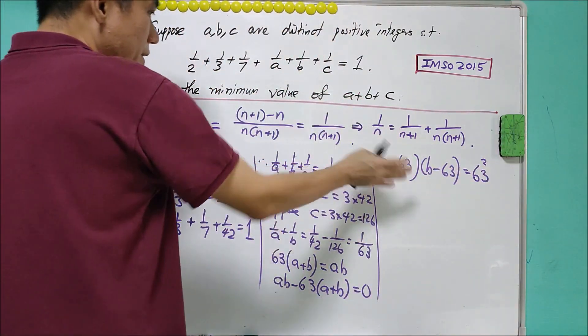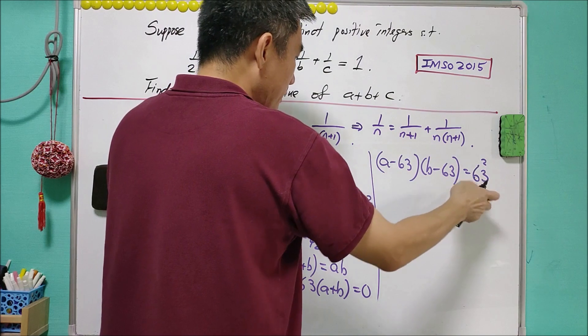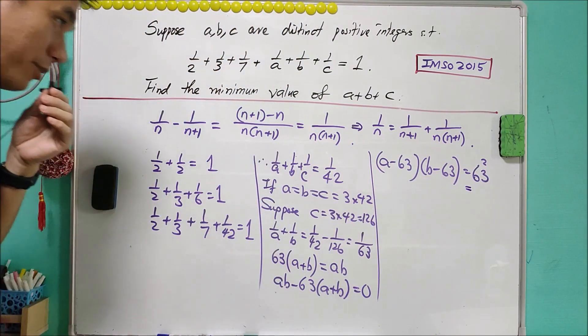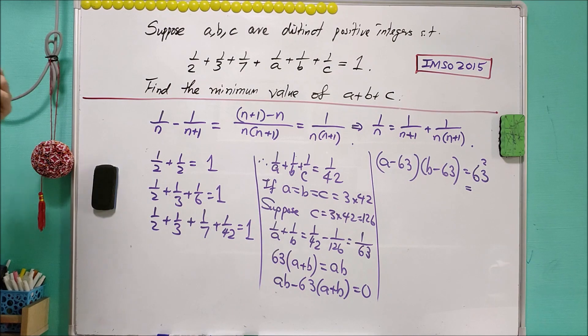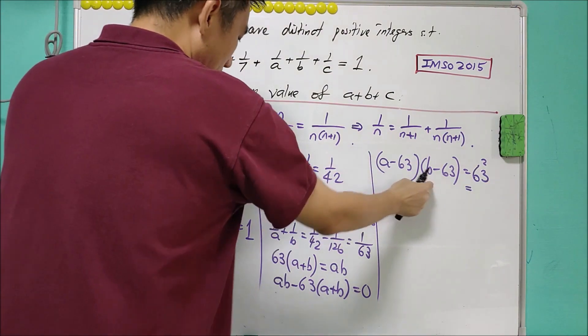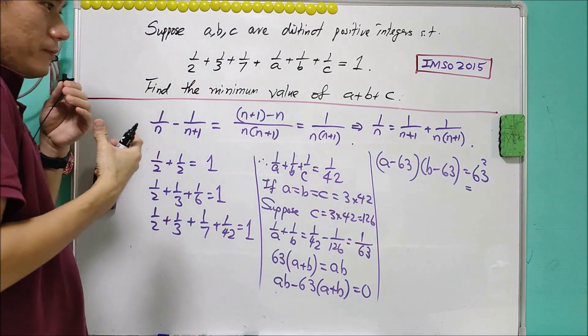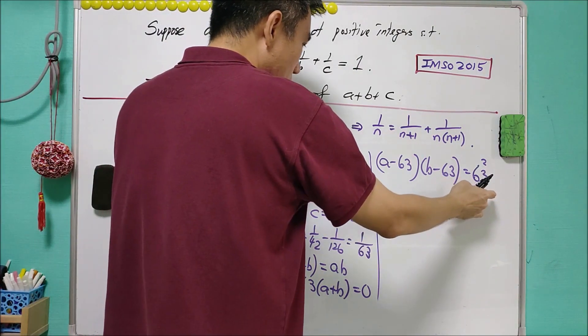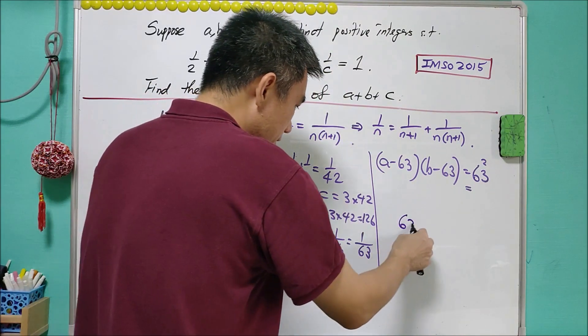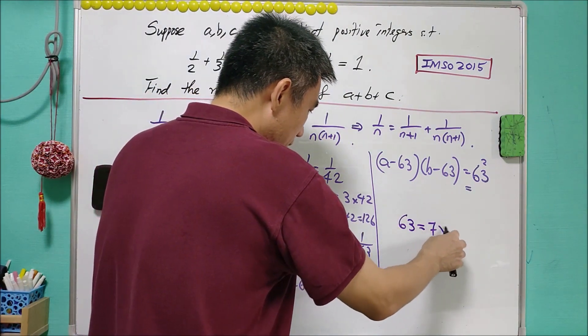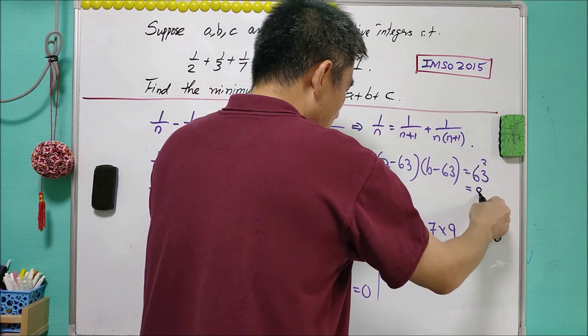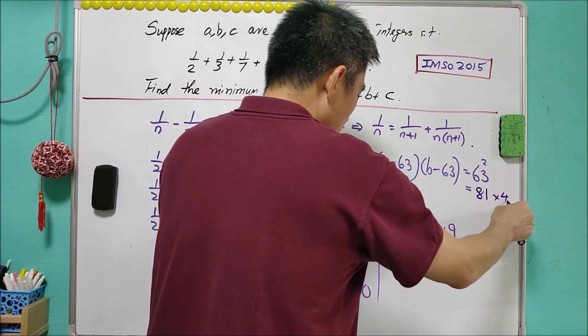And note that A, B are integers. We need to factorize so that we can get the answer. And there are many answers for this question. But in order to get a minimum value of A and B, we need to choose the factorization so that it is very close to 63. And note that 63 itself is equal to 7 times 9. So we can take 81 and 49.